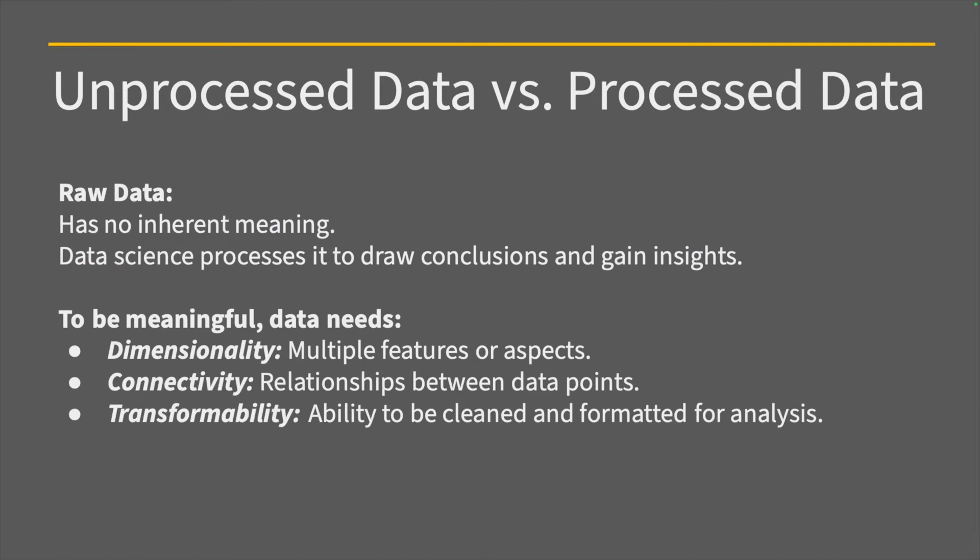Okay, so now we're circling back to what is unprocessed versus processed data, because we talked about this raw data. It has no inherent meaning, or value for that matter. And data science processes allow us to draw conclusions and gain insights. To be meaningful, the data has to have some sort of dimensionality, connectivity, and transformability. So dimensionality, multiple features or aspects, and I promise we'll get into that. If this is not clear, don't worry, we're going to get into each one of these.